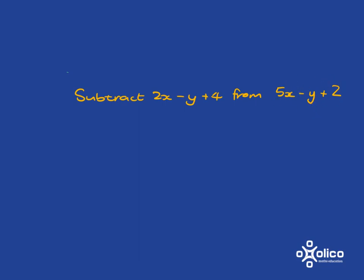Right? So I start with the 5x - y + 2, and the thing that I subtract from it is this: 2x - y + 4. And here are a couple of things that will help you. Just make sure that you actually put these expressions into brackets when you're working with them.